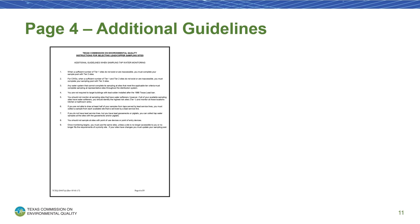Page 4 provides a list of additional guidelines that can answer remaining questions you may have that were not covered in the standard instructions. It may answer questions about how to choose a tier for sites with extenuating circumstances, such as what to do if your sites have goosenecks and pigtails, or what to do if a site has a water softener.